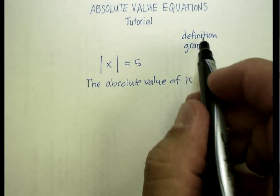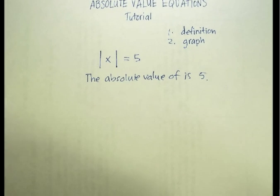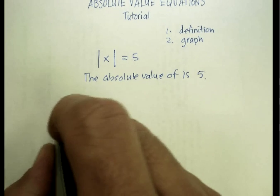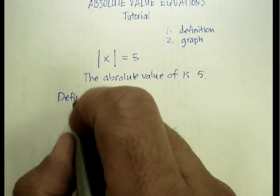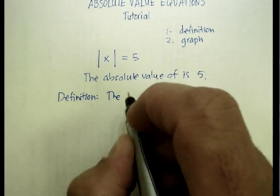Well, the absolute value, the definition for absolute value is the distance from zero. So one more time: the absolute value is the distance from zero.